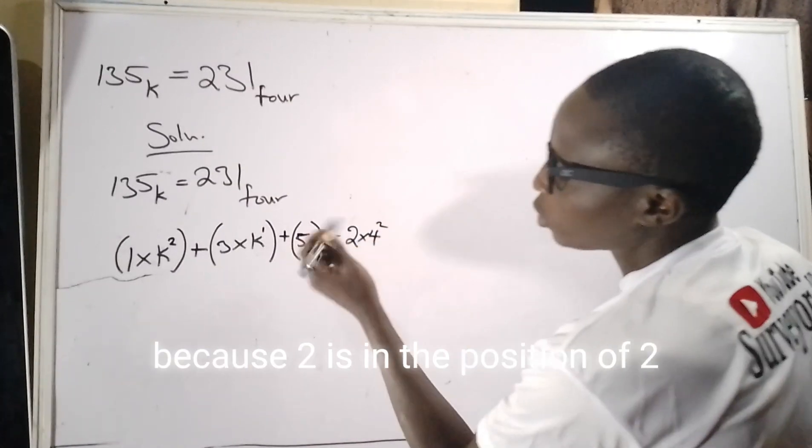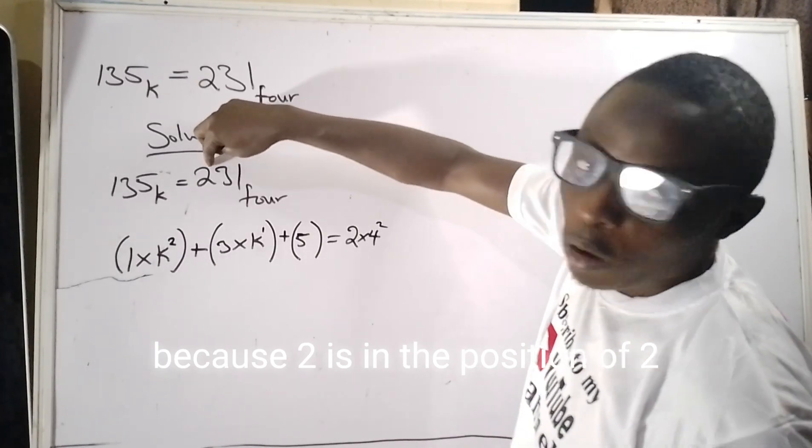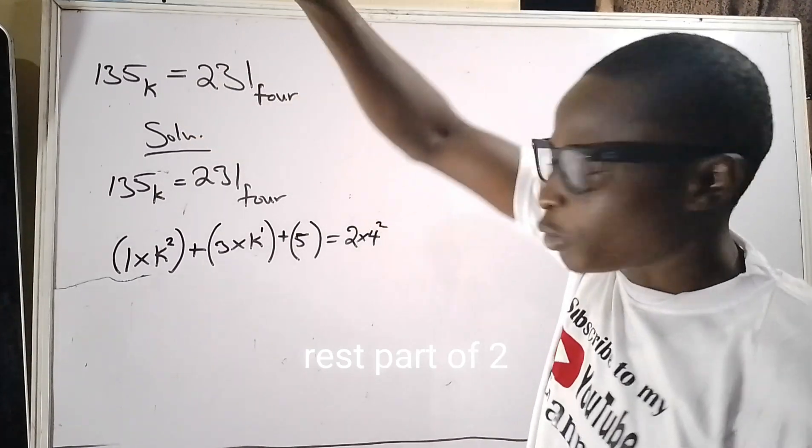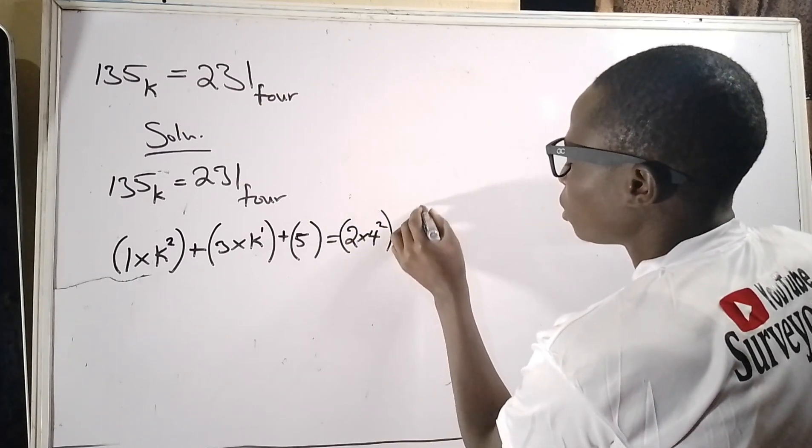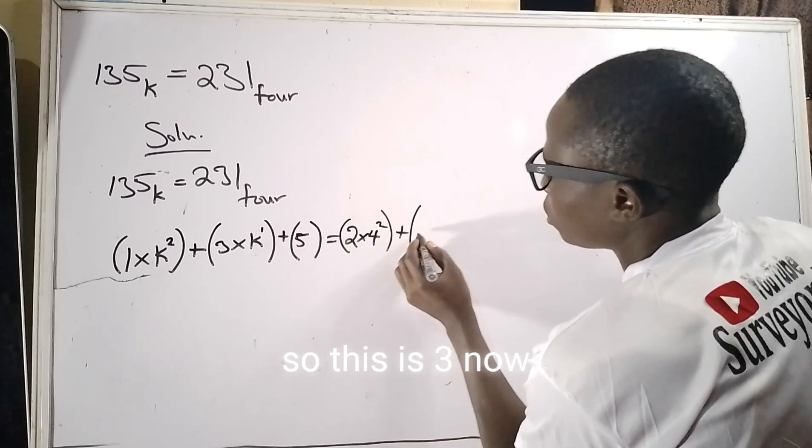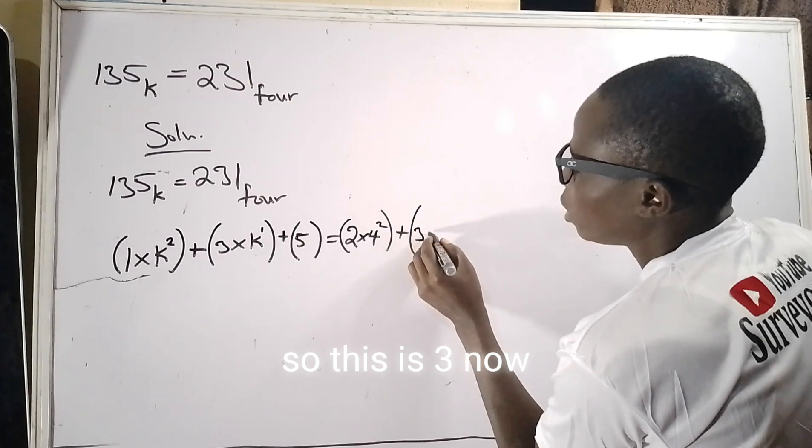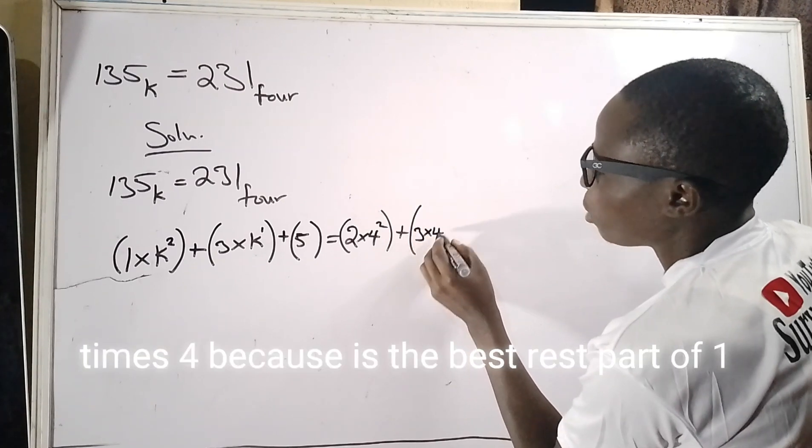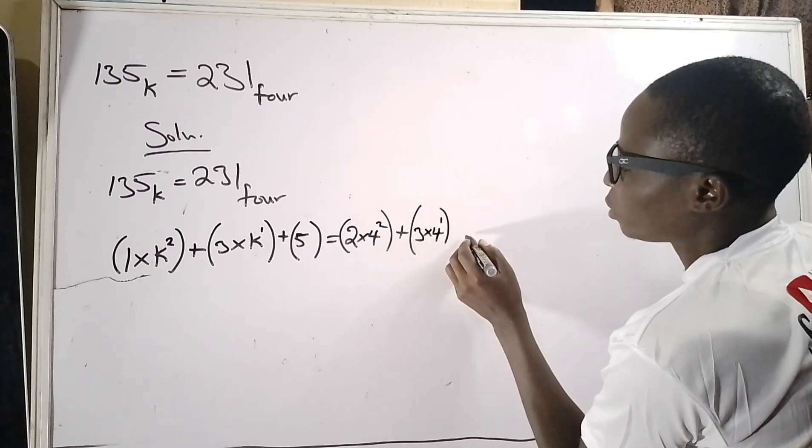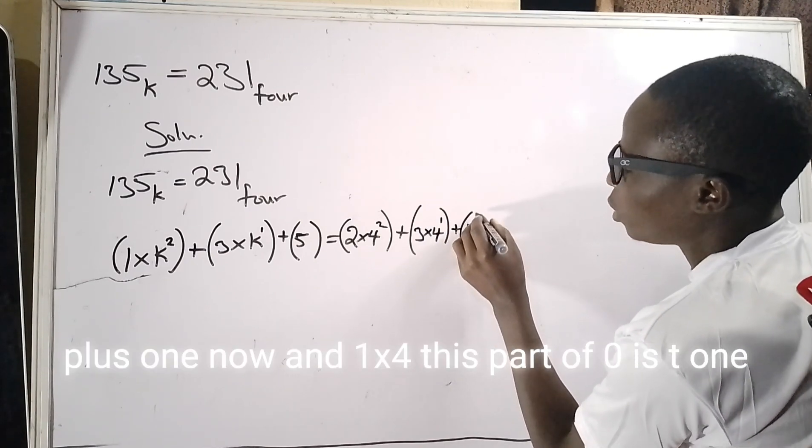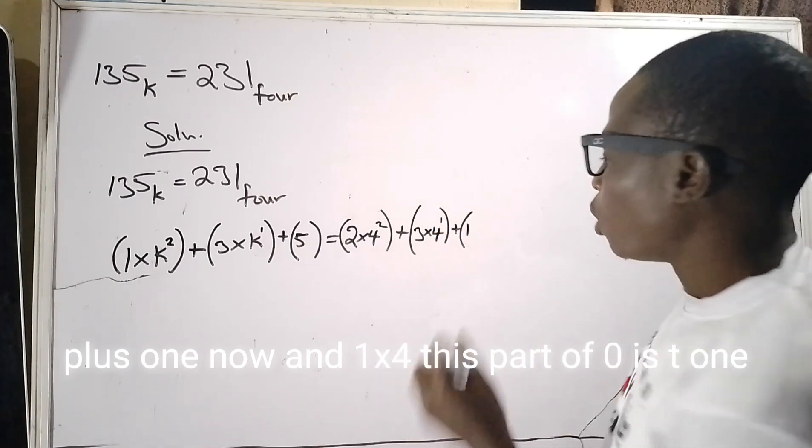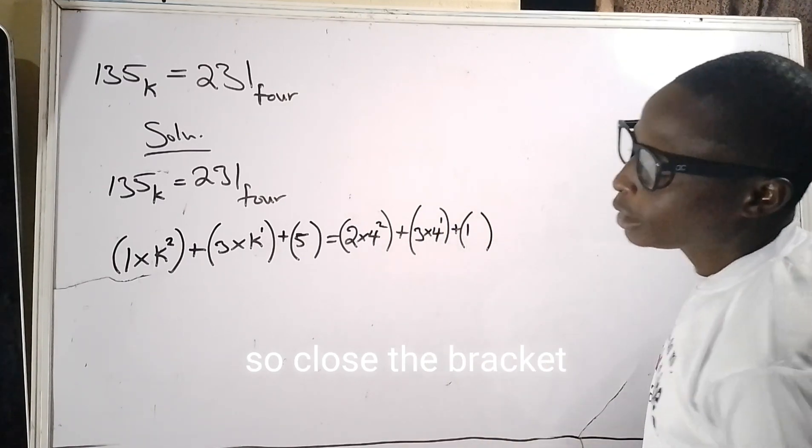This is two raised to the power of two. So close the bracket, open another one. So this is three now times four because it's base four raised to the power of one, plus one. And one times four raised to the power of zero is still one.